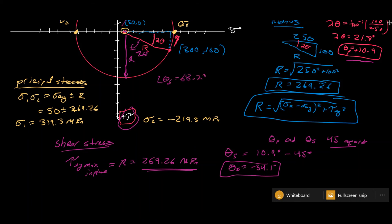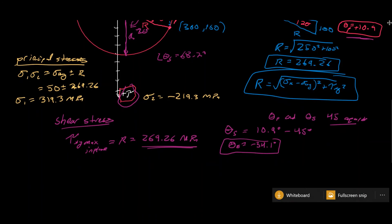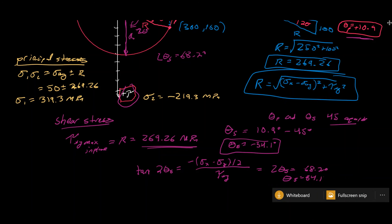We can check that angle using the equation tan(2θs) = −(σx − σy) / 2 / τxy, and we confirm that 2θs = 68.2 degrees, so θs = 34.1 degrees, and since we're going clockwise, that's negative.